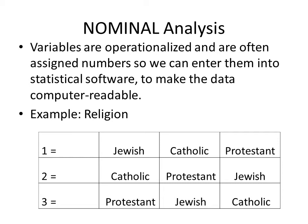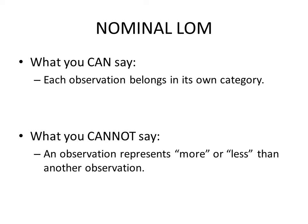When using statistical software such as SPSS, SAS, or Stata, we must operationalize variables by assigning numbers to make data computer readable. For example, with religion, number one could be Jewish, two Catholic, three Protestant — or any other order — because there is no required order in nominal analysis. We can say each observation belongs in its own category, but we cannot say one observation represents more or less than another.